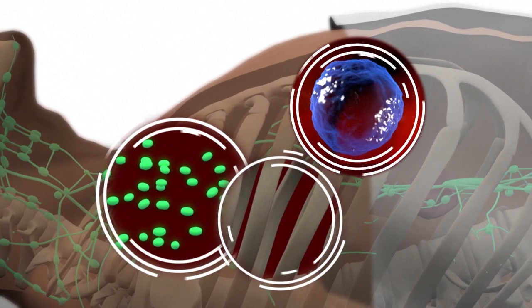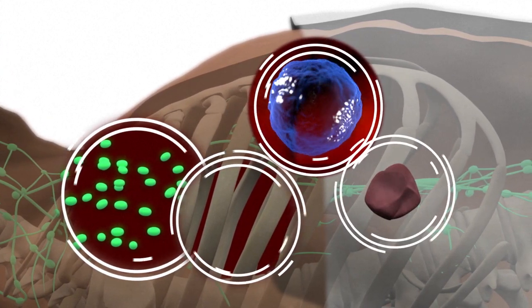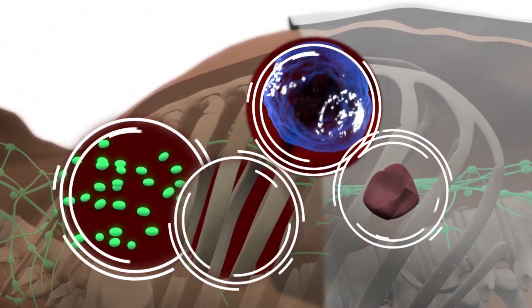Macrophages, so-called eating cells, move around the body hunting for pathogens. The spleen stores and produces white blood cells.